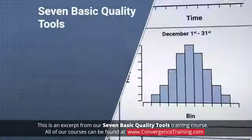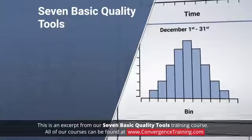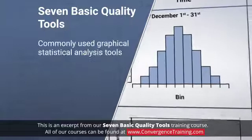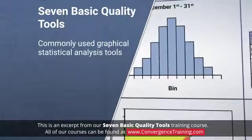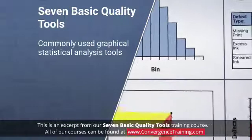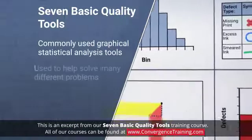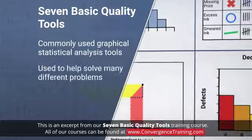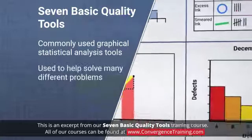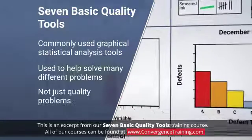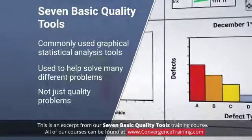The seven basic quality tools are a set of commonly used graphical statistical analysis tools. They can be used to help solve many different types of problems, not just quality problems.